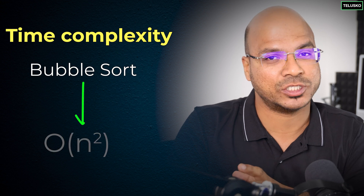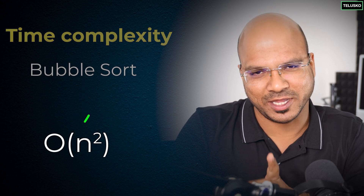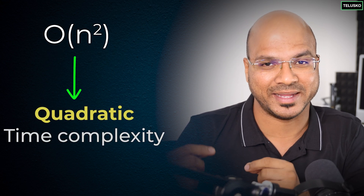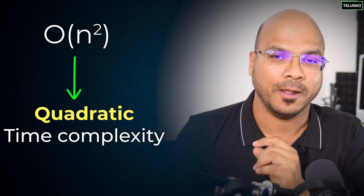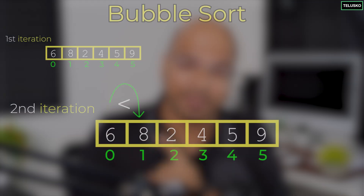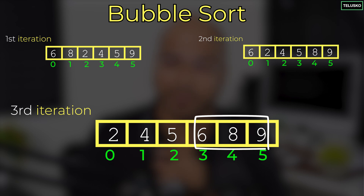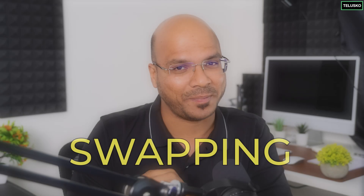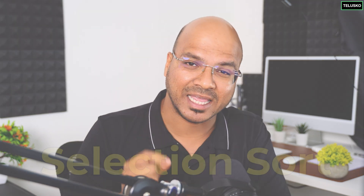When we talk about sorting we have different techniques available. In the previous video we talked about bubble sort, and it works, but the time complexity of bubble sort is O(n²). We're not going to solve that quadratic time complexity here, but we can reduce the number of steps. The big issue with bubble sort is swapping — every time in the inner loop we were doing swapping multiple times, and it consumes a lot of time and memory. That's where selection sort comes into the picture.